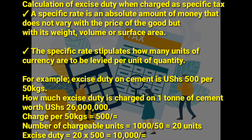Excise duty on cement is Uganda shillings 500 per 50 kilograms — that is a specific rate. How much excise duty is charged on one ton of cement worth 26 million? The charge per 50 kilograms is 500, which is a specific rate. One ton equals 1,000 kilograms, so we divide 1,000 by 50 and get 20 units — that is the number of chargeable units.